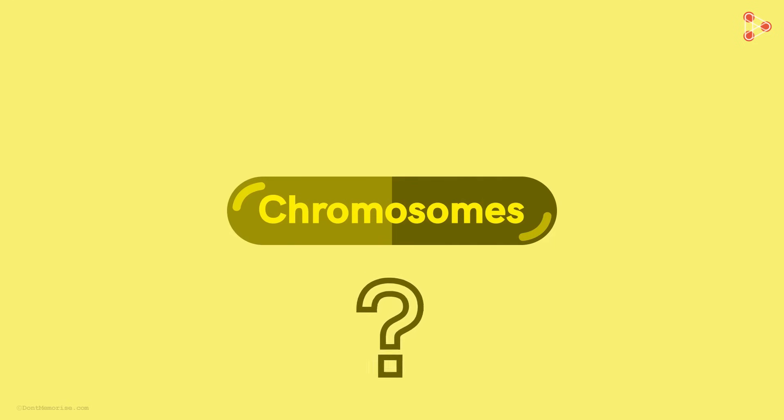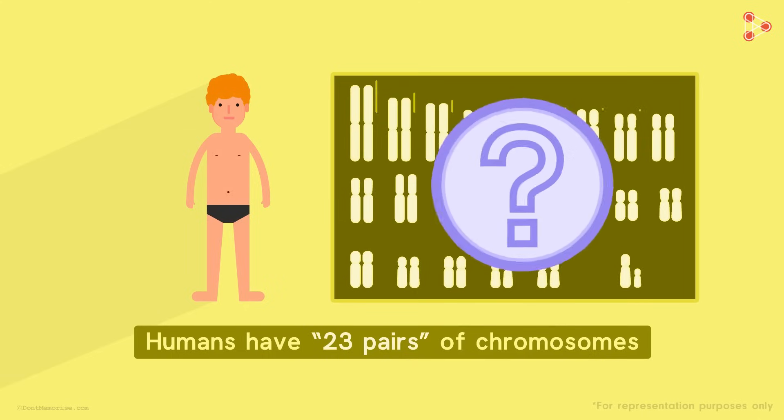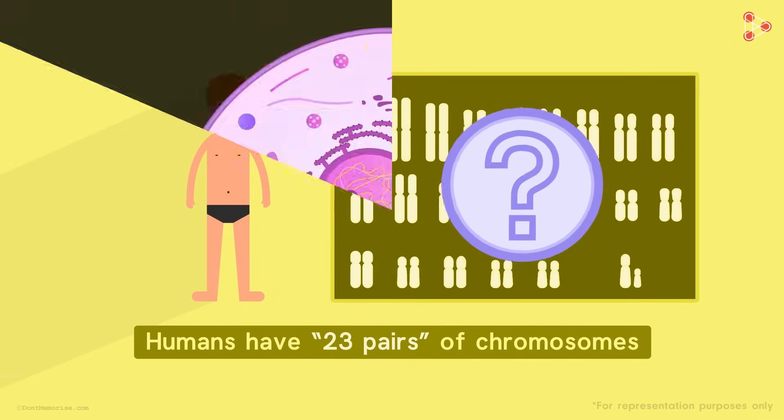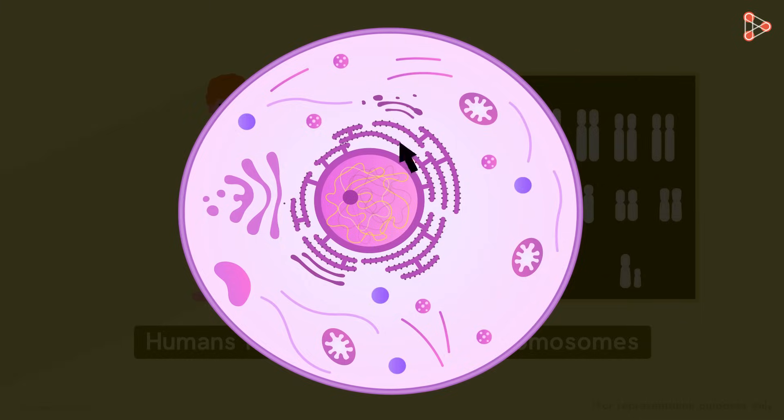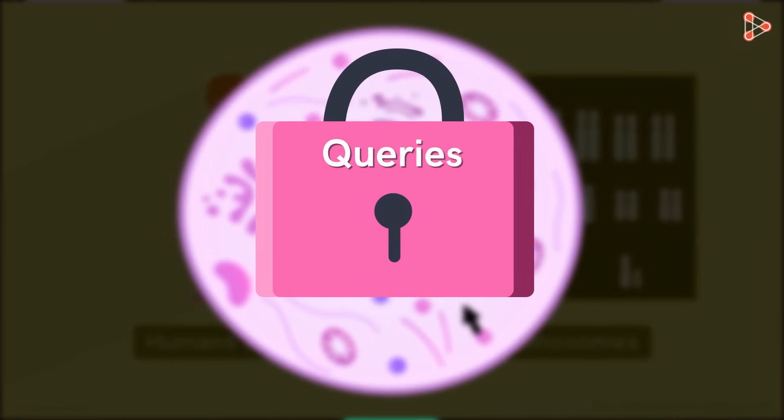So what are chromosomes? We've always come across the saying humans have 23 pairs of chromosomes. But what are they made up of? And where are they actually located in the cell? Let's try and answer all of these queries in this session.